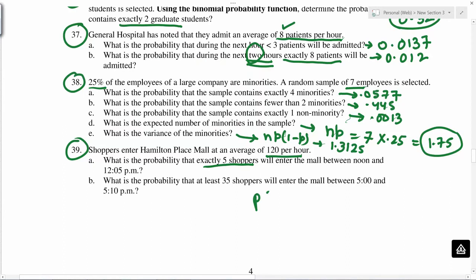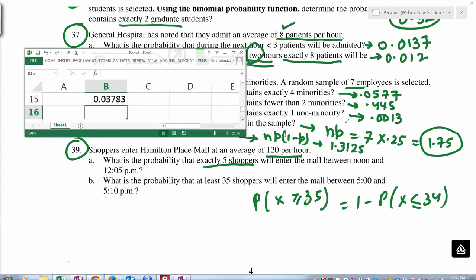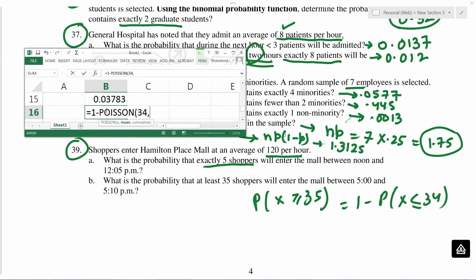Next one is at least 35. So 35 or more, probability of x greater than or equal to 35. So this is same as 1 minus probability of x less than or equal to 34. And now it is in 10 minutes, so you have 20 shoppers average. Average now is 20, and true.